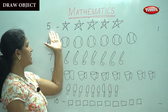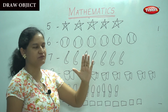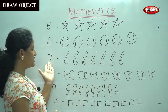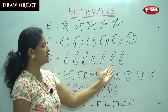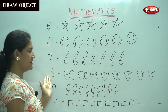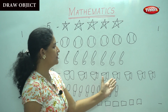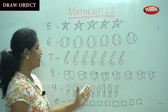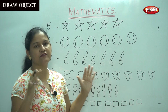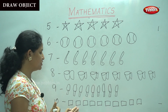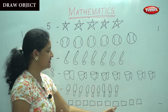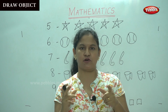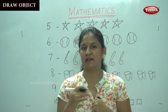Shall we count again? For number 5, we have 1, 2, 3, 4, 5 — 5 objects. For number 6: 1, 2, 3, 4, 5, 6 — 6 objects. For number 7: 1, 2, 3, 4, 5, 6, 7 — 7 objects. For number 8: 1, 2, 3, 4, 5, 6, 7, 8 — 8 objects. For number 9: 1, 2, 3, 4, 5, 6, 7, 8, 9 — 9 objects. And for number 10: 2, 3, 4, 5, 6, 7, 8, 9, 10. Children, I want you to count the number of objects as you draw it. Then you will be able to learn numbers as well.